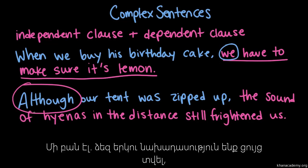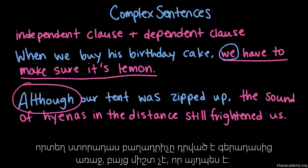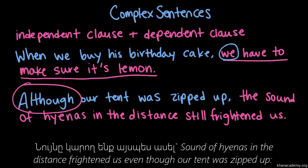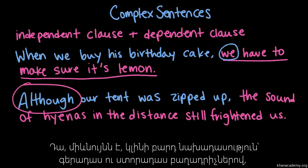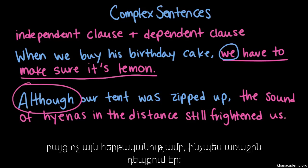One other thing: we were showing you two sentences where the dependent clause comes before the independent clause, but that's not necessarily always going to be the case. For example, we could have said 'the sound of hyenas in the distance frightened us, even though our tent was zipped up.' That would still be a complex sentence — an independent clause and a dependent clause, just in a different order. They don't have to be in this order that we've done twice.